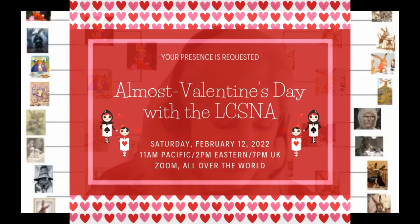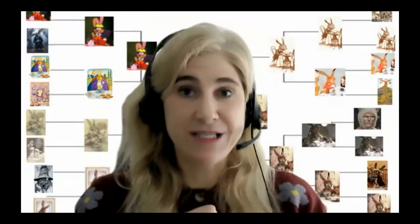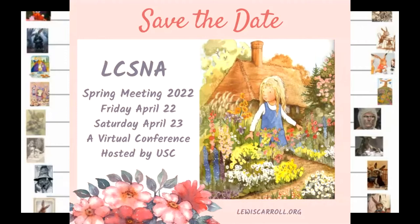Dana Noon is going to show us some of her Flat Alice collection of Valentines, and we have some other surprises cooked up as well. And I think this is breaking news — I believe this is the first time the spring meeting dates have been publicized: Friday April 22nd and Saturday April 23rd, hosted by our friends at USC, who also host the vast and wonderful Cassidy collection.